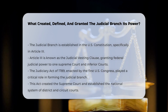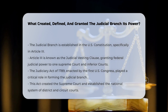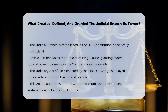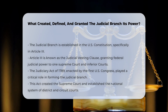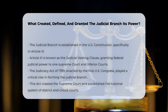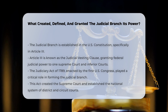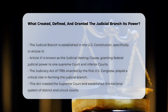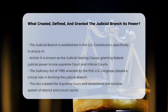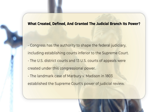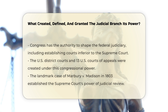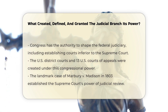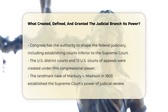The Judiciary Act of 1789, passed by the first U.S. Congress, played a crucial role in establishing the judicial branch. This act created the Supreme Court, as well as the national system of district and circuit courts, setting the stage for the federal judiciary as we know it today.